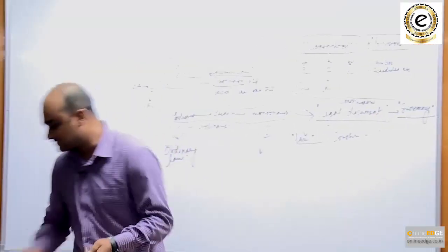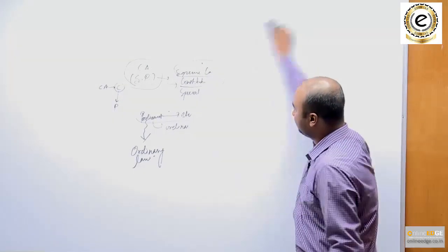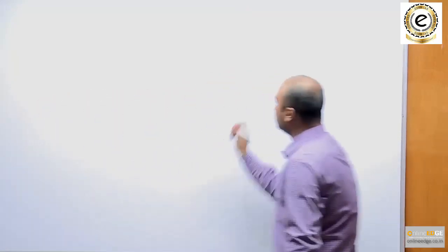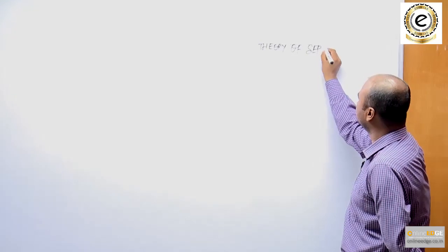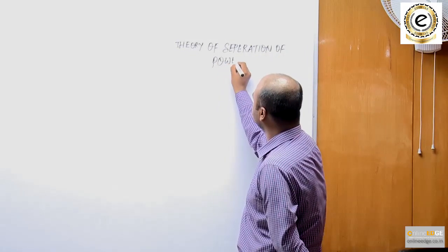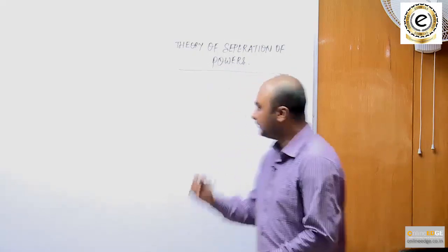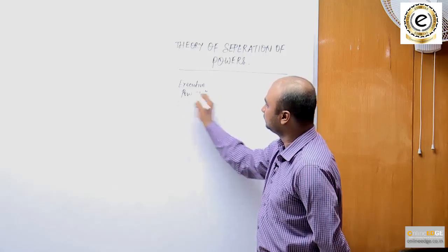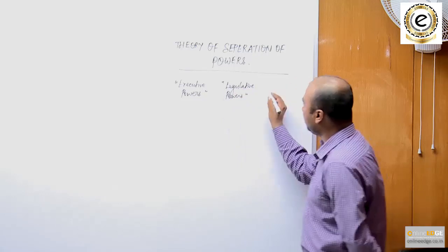Now let us go to our second topic, that is the theory of separation of powers. There are mainly three kinds of powers of any government: executive powers, legislative powers, and judicial powers.